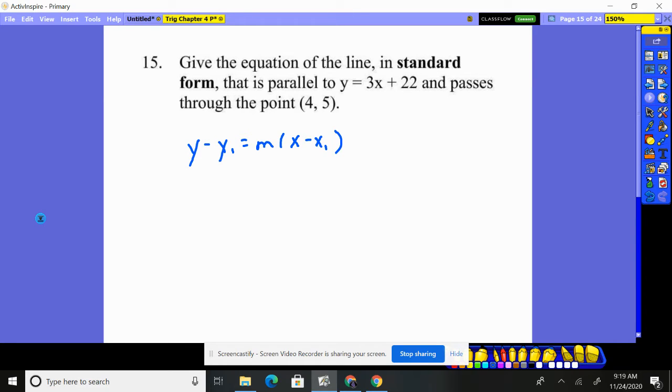Now it does want it in standard form. Okay, no big deal. So it's parallel to this guy. Well, this guy has a slope of 3. If I'm parallel, I'm going to have the exact same slope. So I'm going to use a slope of 3.